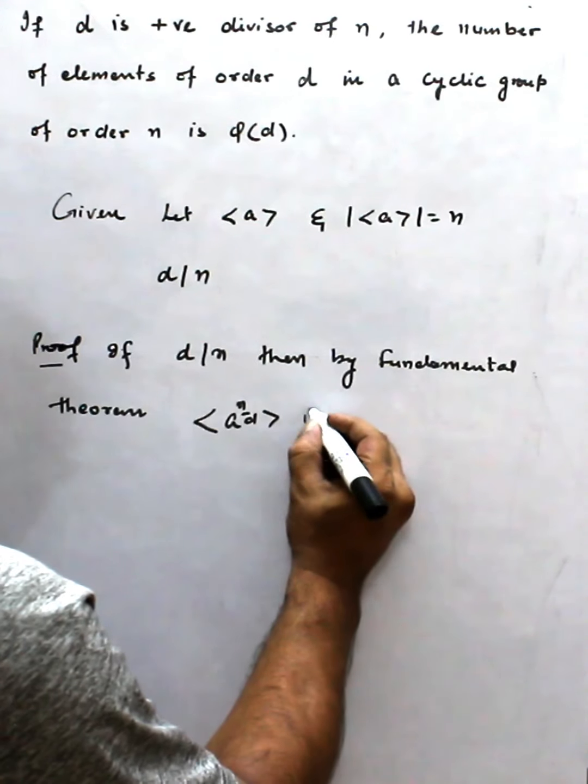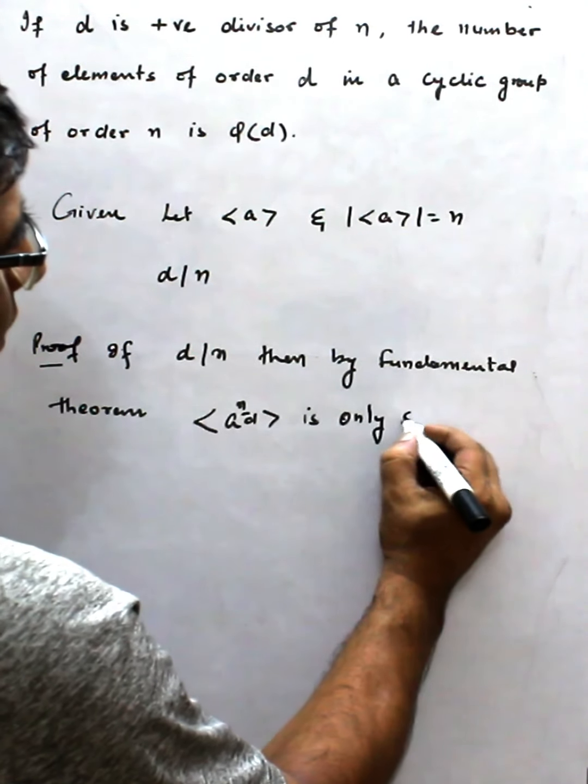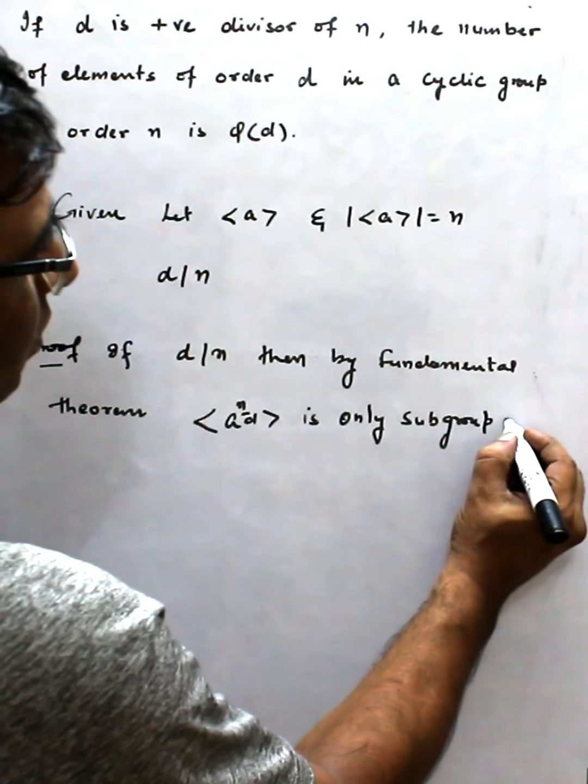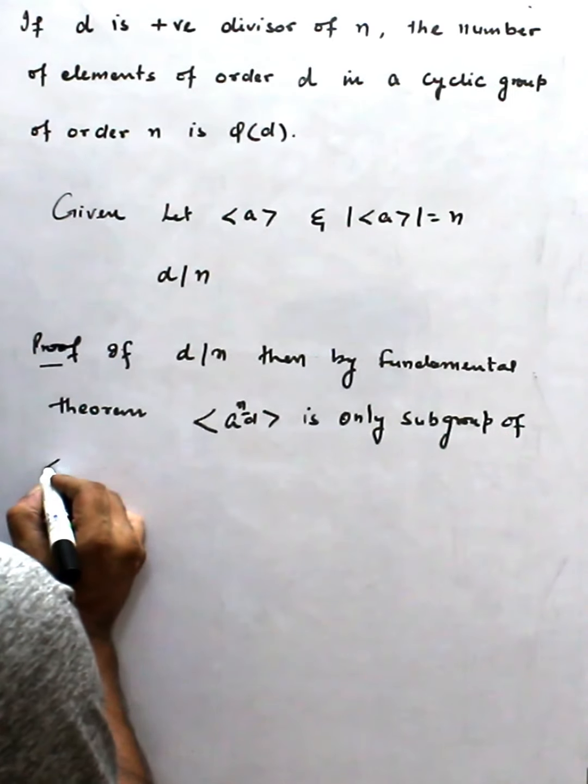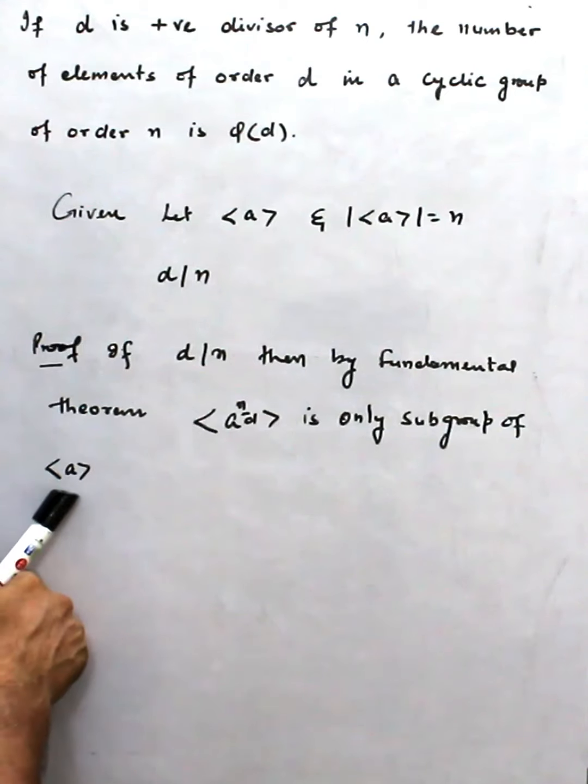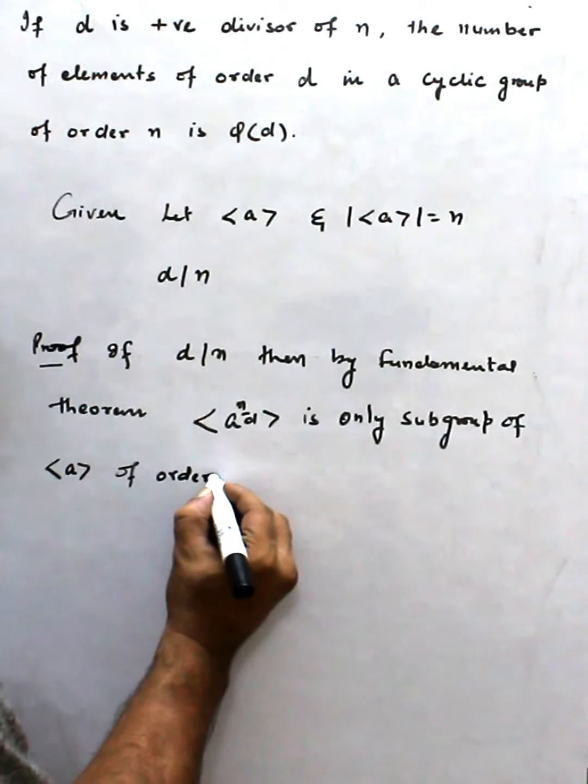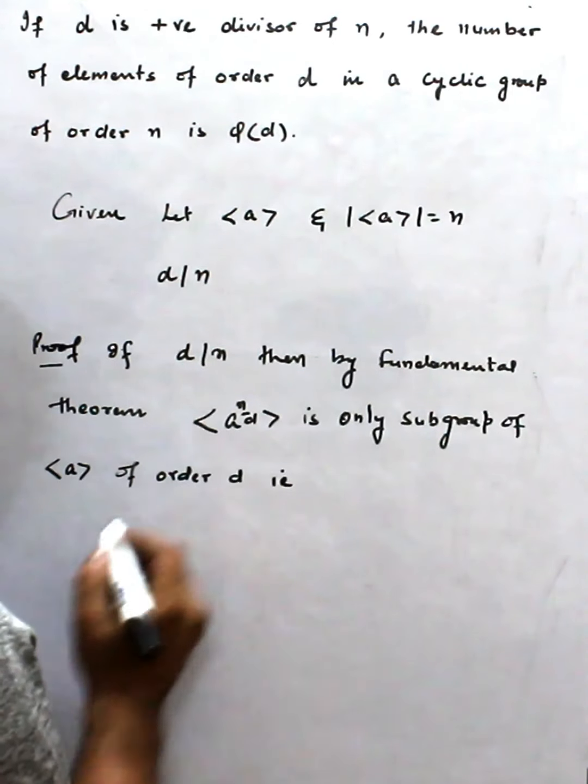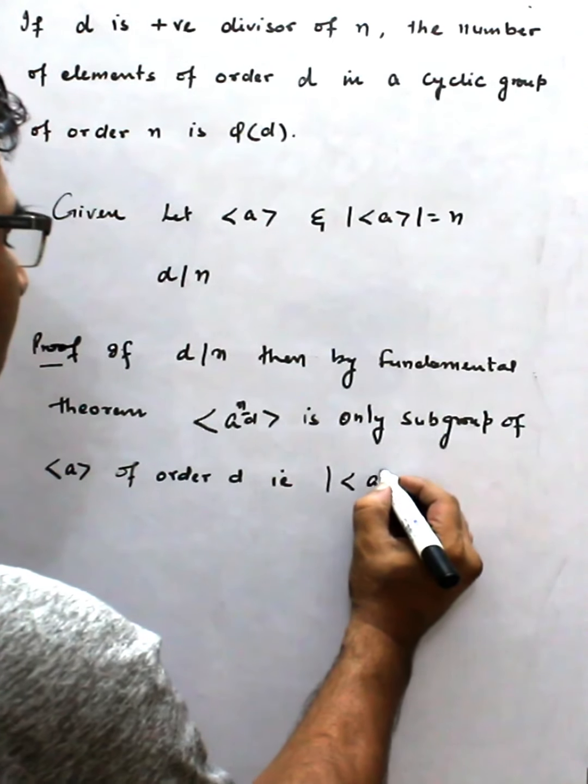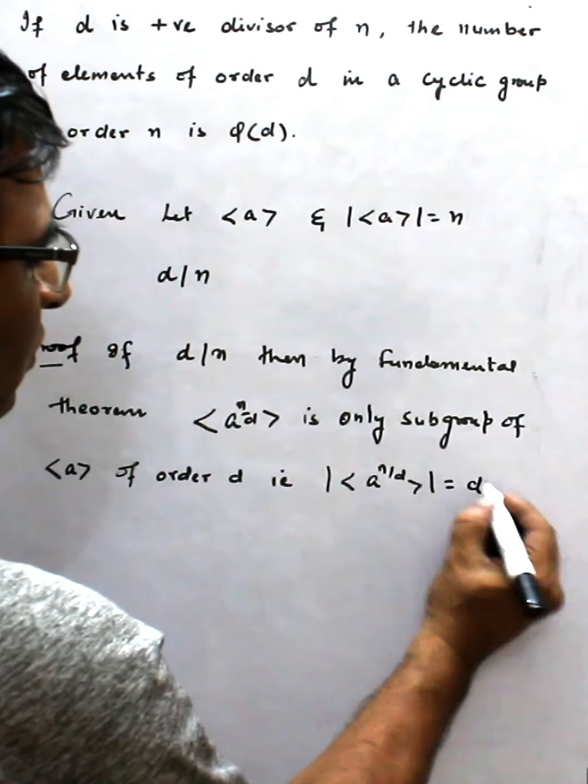<a^(n/d)> is the only subgroup of cyclic group <a> of order d. This means the order of a^(n/d) equals d.